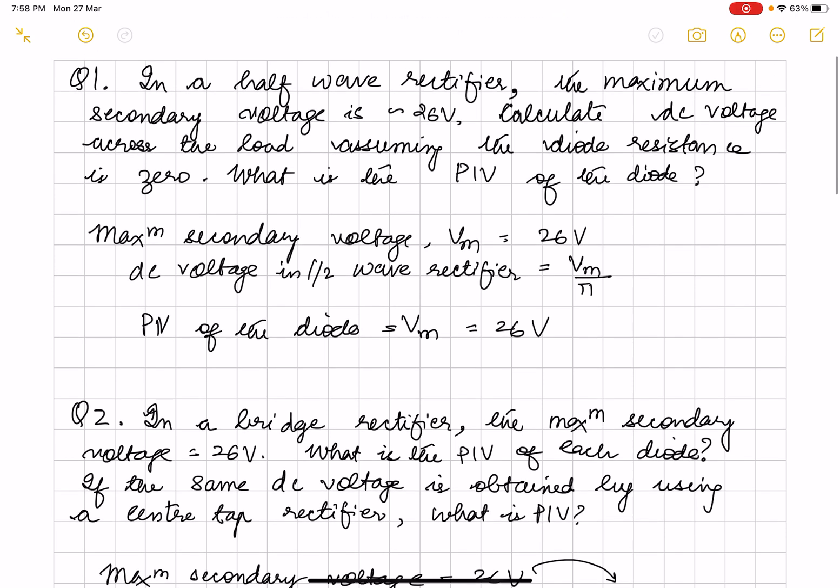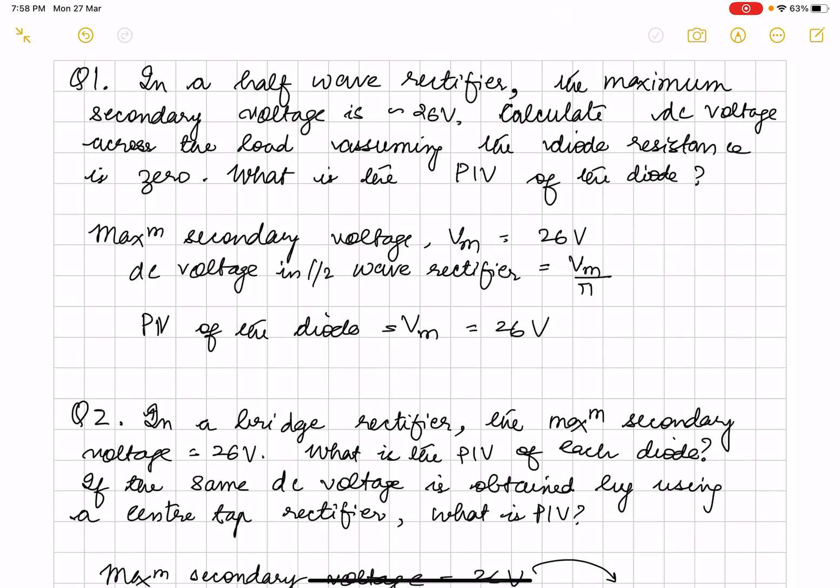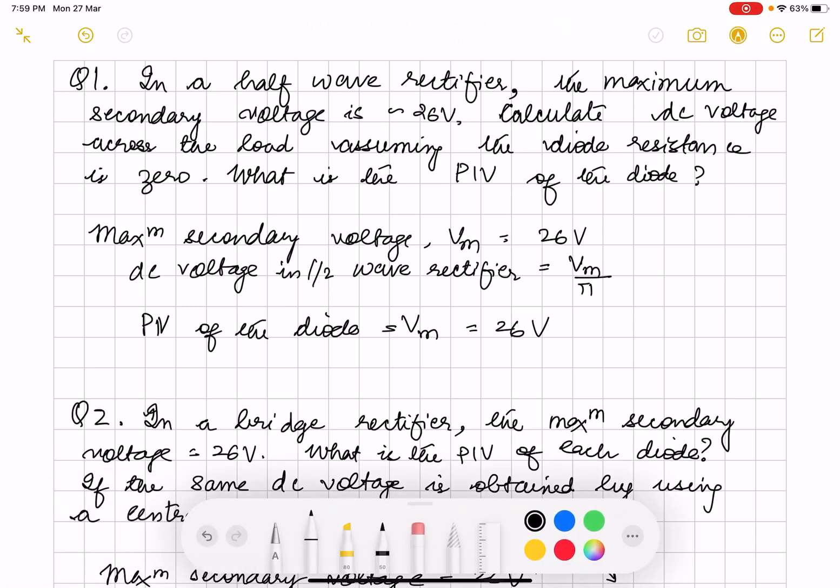So say in a half wave rectifier, the maximum secondary voltage is 26 volt. Calculate the DC voltage across the load assuming the diode resistance is zero. What is the PIV of the diode is also something that you have to calculate.